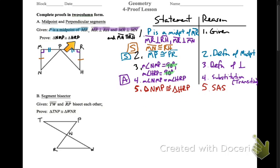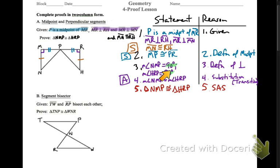Main points of this: what happens when there's a midpoint? Congruent segments. What happens when there are perpendicular segments? They're both equal to 90 degrees, so they're equal to each other.